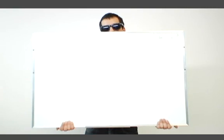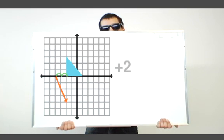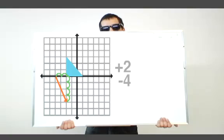In a typical translation example, you would be asked, given the translation vector, translate the triangle below. The translation vector tells you to move your point two units to the right and four units down.